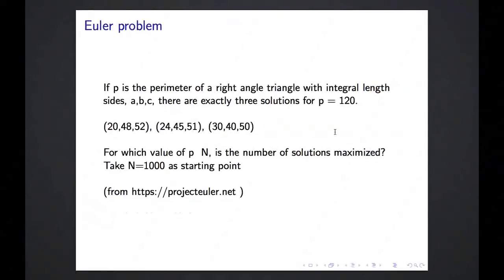So I have to pick another example problem for this. Here I have chosen one of the Project Euler problems. This is an interesting website which has a large number of mathematically oriented problems. The problem here is if P is the perimeter of the right angle triangle with integral length sides ABC, then for some value of P, which is the perimeter, the sum of A, B and C, there's exactly three solutions and they are given there. So the question is for which value of P less than N is the number of solutions maximized? In the Euler example, they take N equals 1000 as a starting point, but you can increase it to make your calculation longer. So this is really a toy problem. It's not of scientific interest, but the nice thing is that it does become quite numerically intensive as you increase N. So you can always ramp it up to make it computationally challenging.